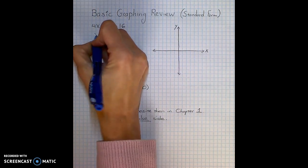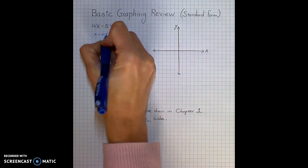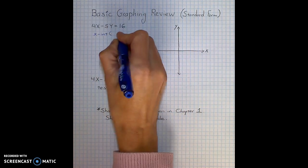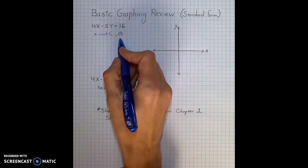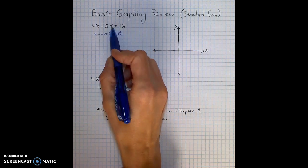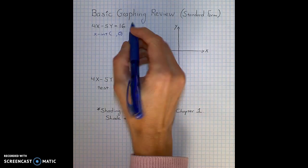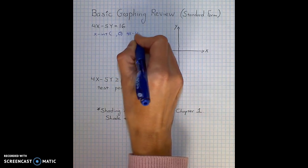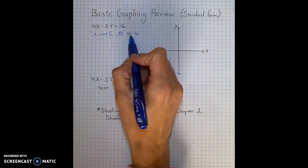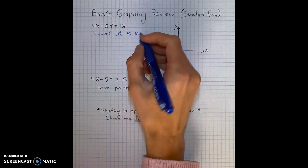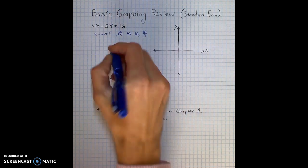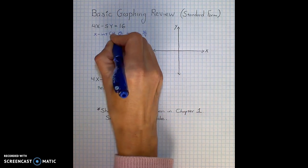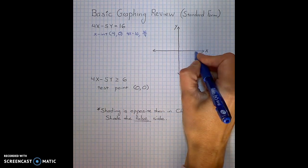First find the x-intercept. The x-intercept occurs on the x-axis where y equals 0. So if I substitute 0 into the equation where y is, I end up with the equation 4x equals 16. As a result, the x-intercept is found by simply dividing 16 by 4. 16 divided by 4 is 4. The x-intercept is 4.